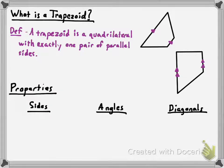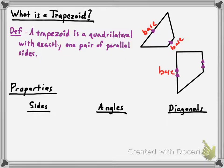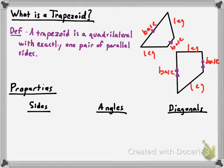We know parallelograms have two pairs of parallel sides; a trapezoid has one pair. If there are no pairs of parallel sides, then for now we just call it a quadrilateral. Now, what are some properties you need to know about trapezoids? Before I give those to you, let me give you a little terminology. The parallel sides in a trapezoid are always called bases, and then the non-parallel sides are called legs. When we're talking about the properties of the sides of a trapezoid, it makes sense to refer to the legs and the bases.